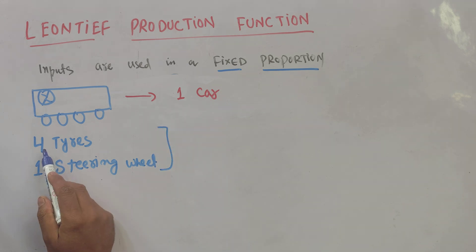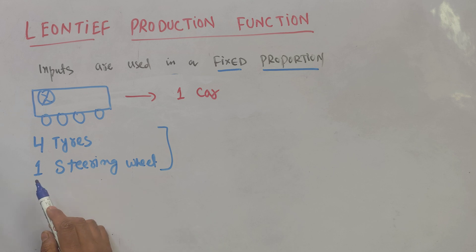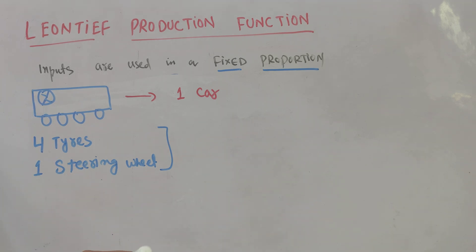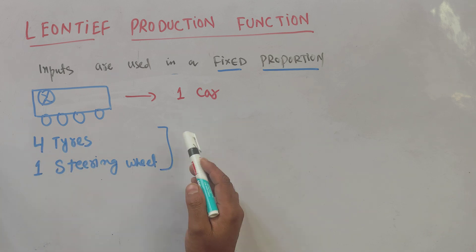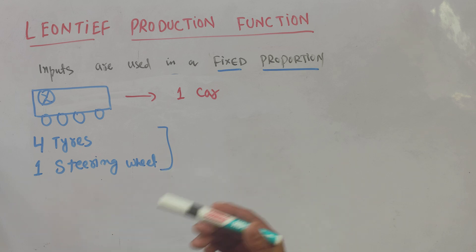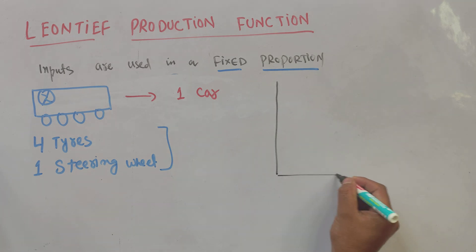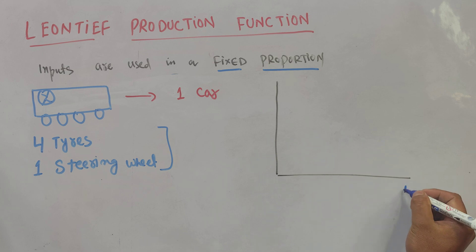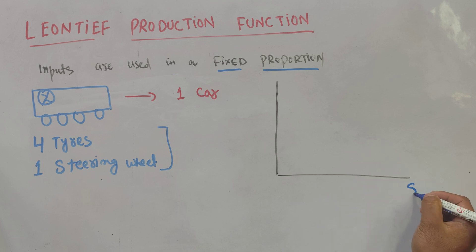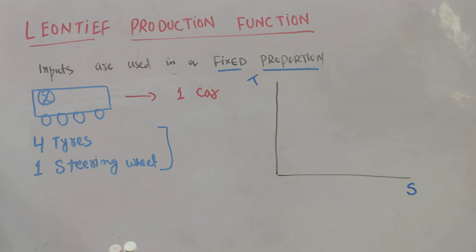Now if we increase the units of tires without changing the units of steering wheel in a fixed proportion, we will not be able to increase our output of producing cars. We would have to double the units of both tires and steering wheel. Graphically, let us put steering wheel on the horizontal axis and units of tires on the vertical axis.